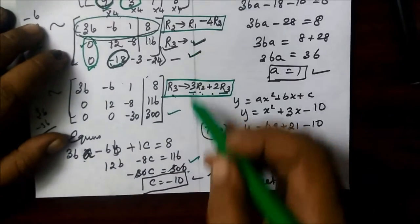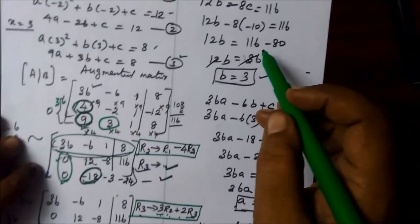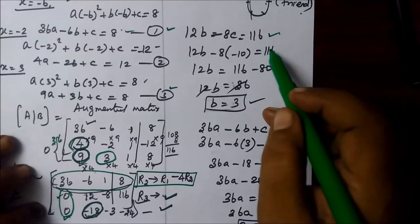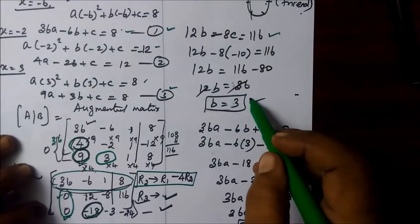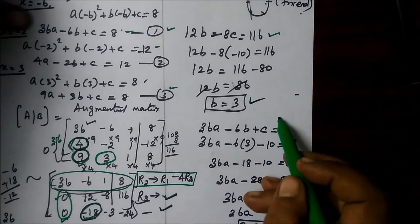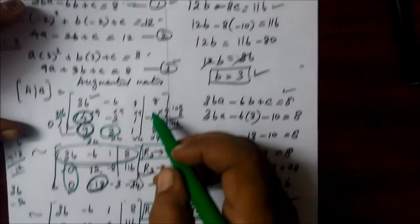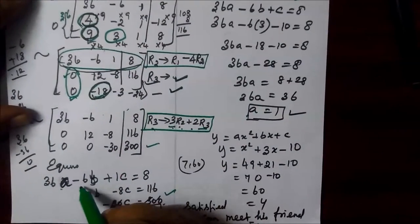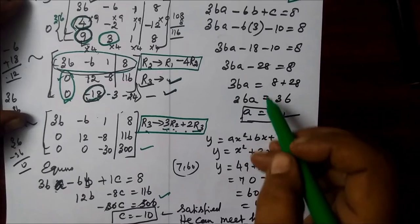Now, A value and C value contribute to the second equation. So when you substitute in the second equation, B changes, and add to the first equation. You know the first equation: 36A minus 6B plus 1C.